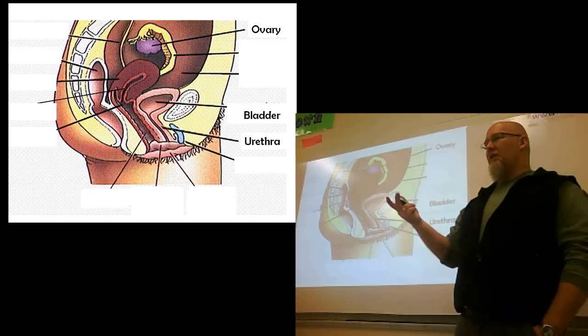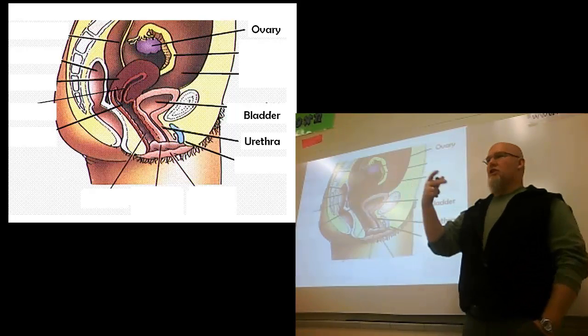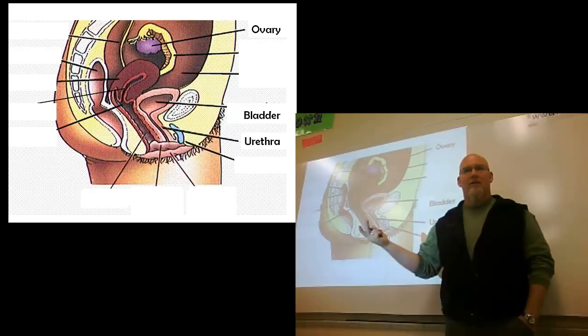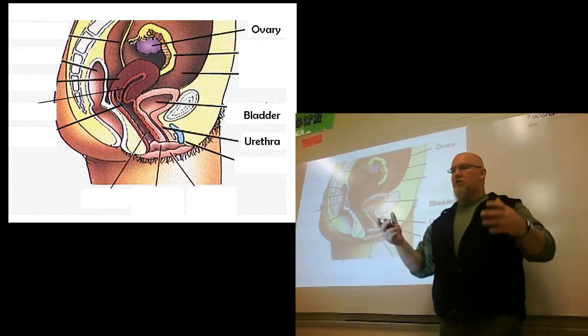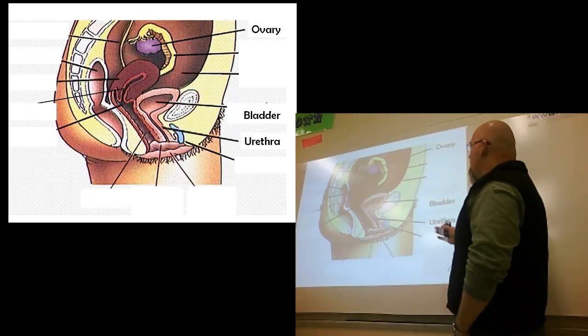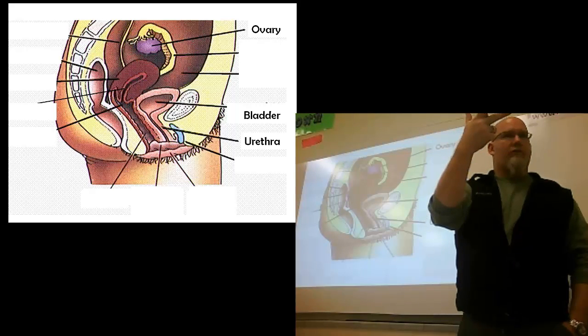Once you hit your mid-50s, typically, you go through this thing called menopause. Your hormone levels start to change. That changes the menstrual cycle. You quit releasing eggs. That's that whole menopause, the change, all that stuff, usually mid-50s. So, ovaries produces the egg cell and two different hormones.